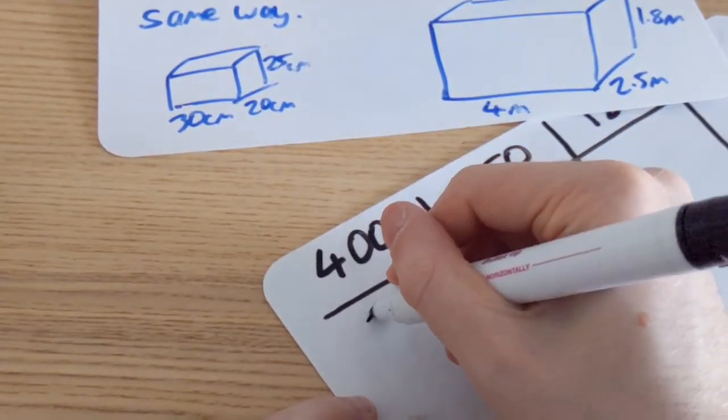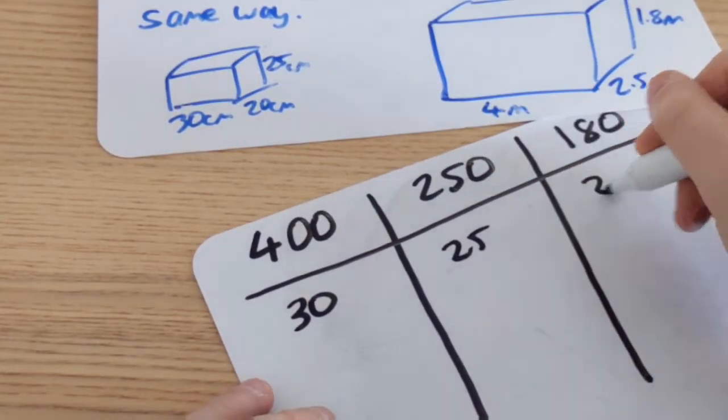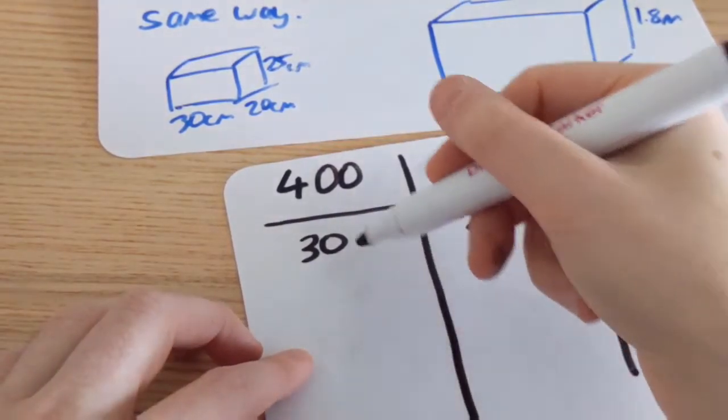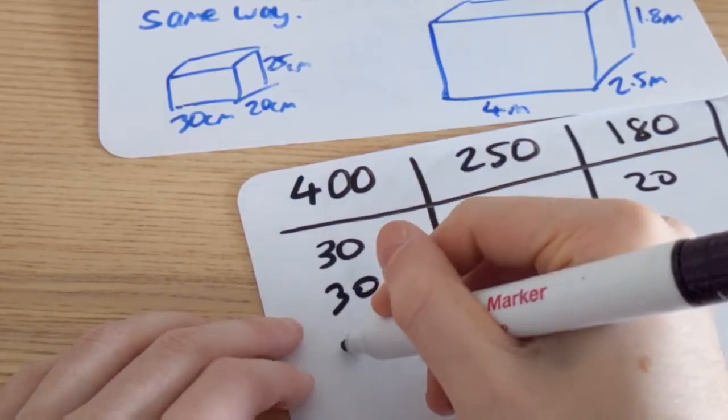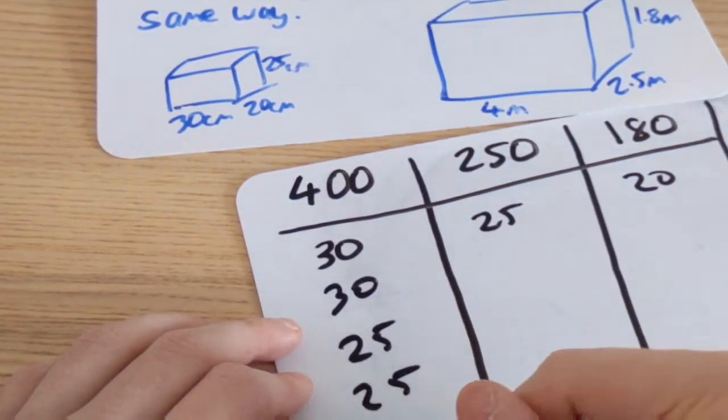The best way of making sure you've got all the different ways is to start with 30, 25 and 20. I think the best way of doing that is to just go through the columns and do 30 there, 30 there, 25 there, 25 there, 20 and 20.